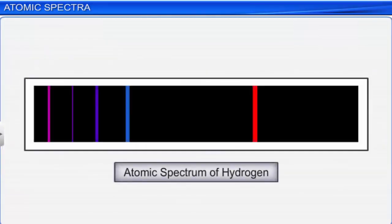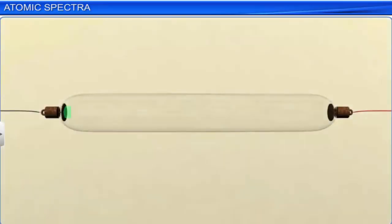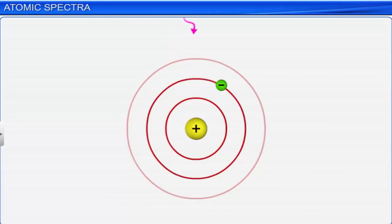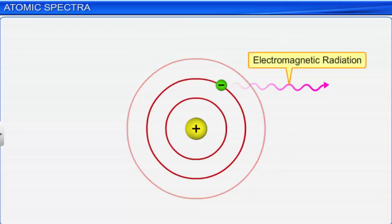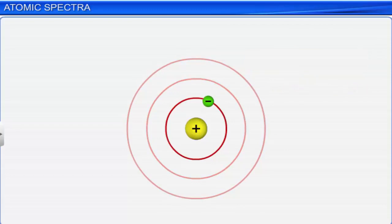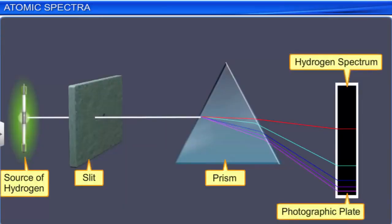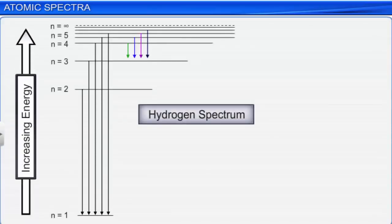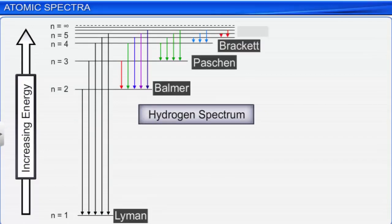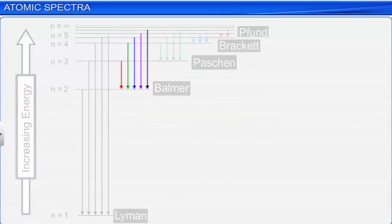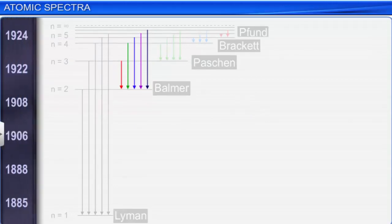Now let us study the line spectrum of hydrogen, which is a one-electron system. When an electric discharge is passed through hydrogen gas, hydrogen molecules dissociate to produce energetically excited hydrogen atoms. These excited atoms emit electromagnetic radiation of discrete frequencies while coming back to lower energy levels. The resultant hydrogen spectrum consists of multiple series of lines named after their discoverers. The first series in the hydrogen atomic spectrum, the Balmer series, was discovered by Johann Jacob Balmer in 1885. Its lines belong to the visible spectrum and are observed when electrons jump from n ≥ 3 to n = 2 principal energy level.